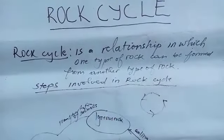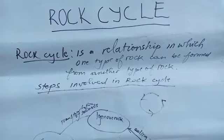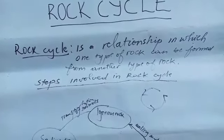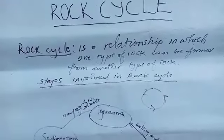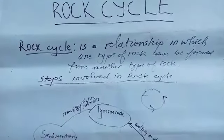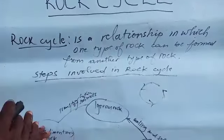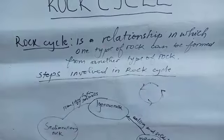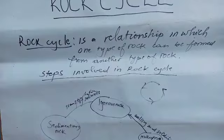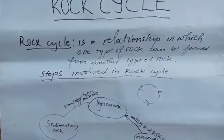As we said in the previous episode, we discussed about three types of rock: igneous rock, sedimentary rock, and metamorphic rock. This rock cycle is going to explain how one type of rock can be formed from another — how sedimentary rock can be formed from igneous rock, how metamorphic rock can be formed from sedimentary rock, and how igneous rock can be formed from metamorphic rock.